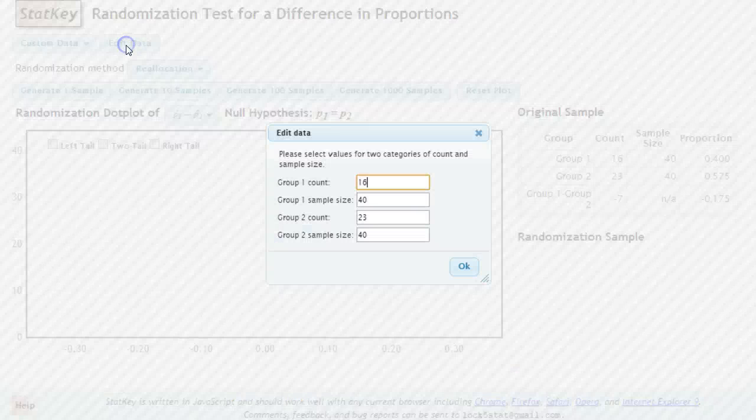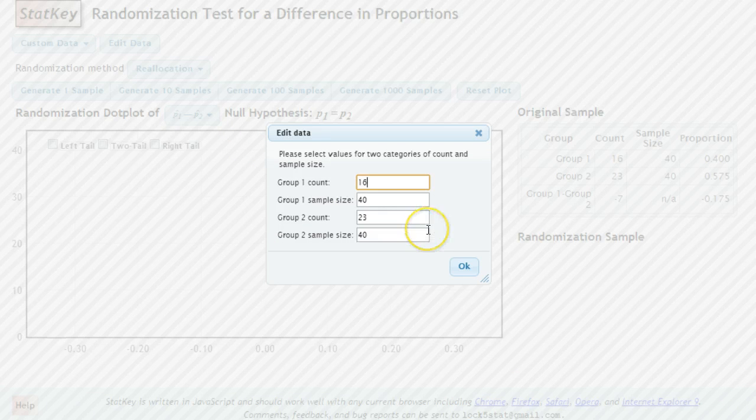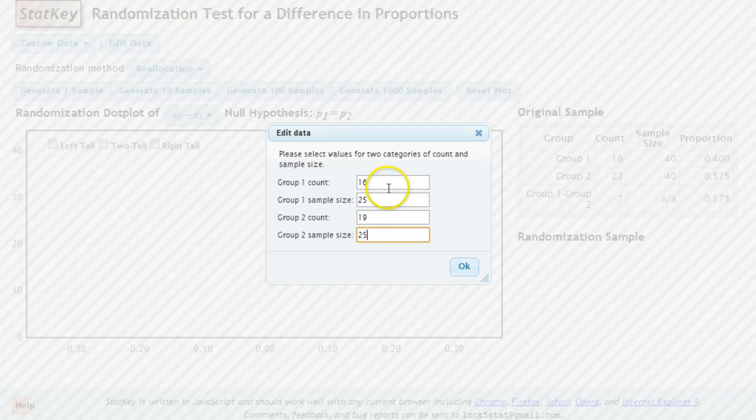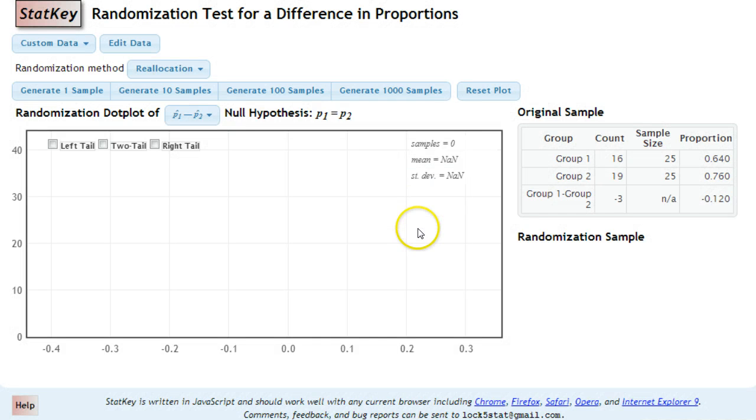And in here we are going to edit our data. And regardless of what we had typed in before we have a 16 out of 25 for our group 1. And we have a 19 out of 25 for our group 2. So the 16 out of 25 represents getting margarine. The 19 out of 25 represents actually getting butter. And how many people thought that they got butter in each of those two groups.